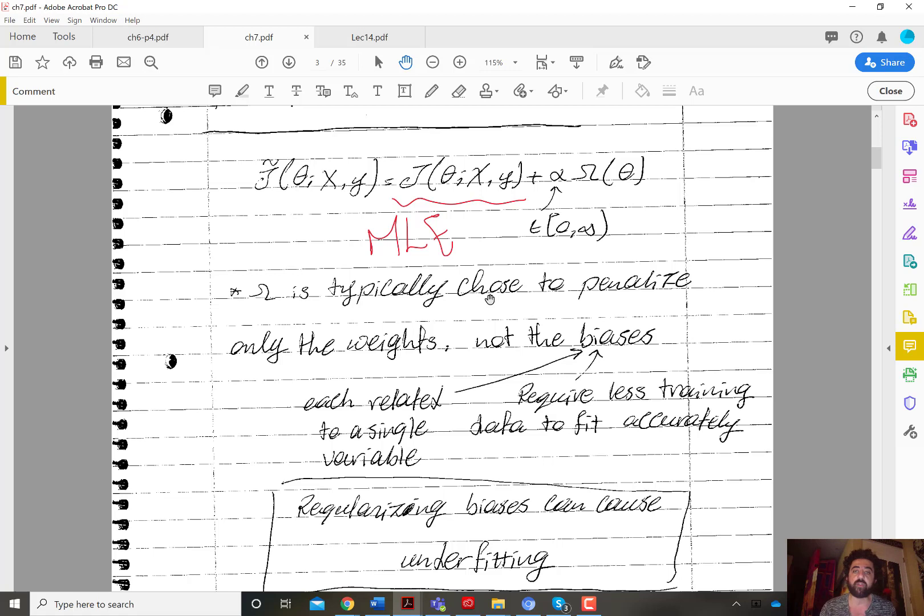And usually the choice of that norm will reflect a prior belief about how the solution will look like. So, for example, if you have an L0 norm, then you want to penalize the number of non-zero weights. So you are enforcing that many of the weights should be zero.